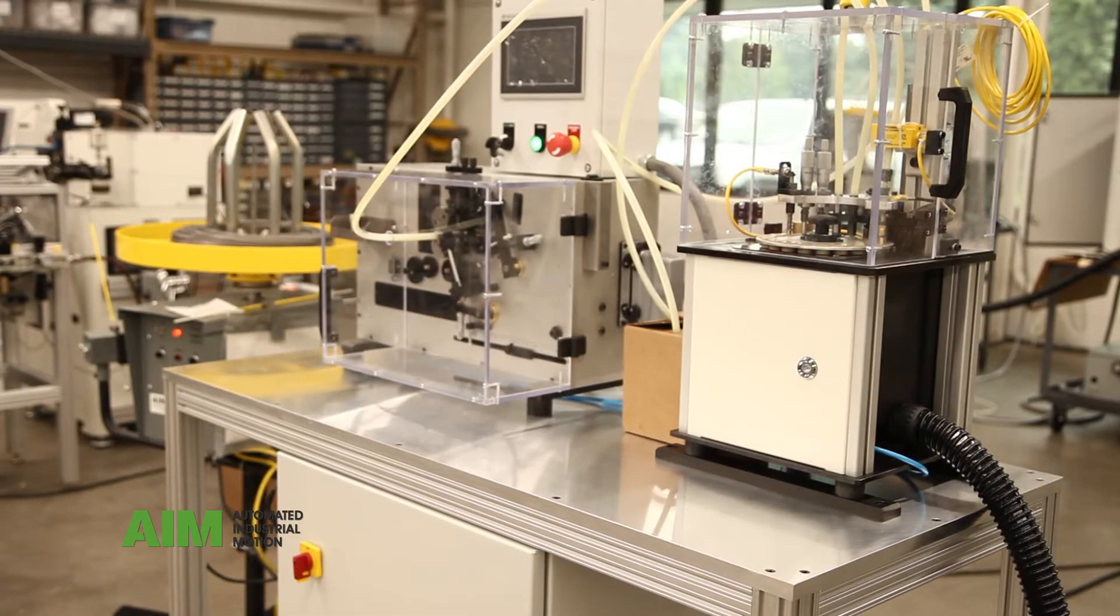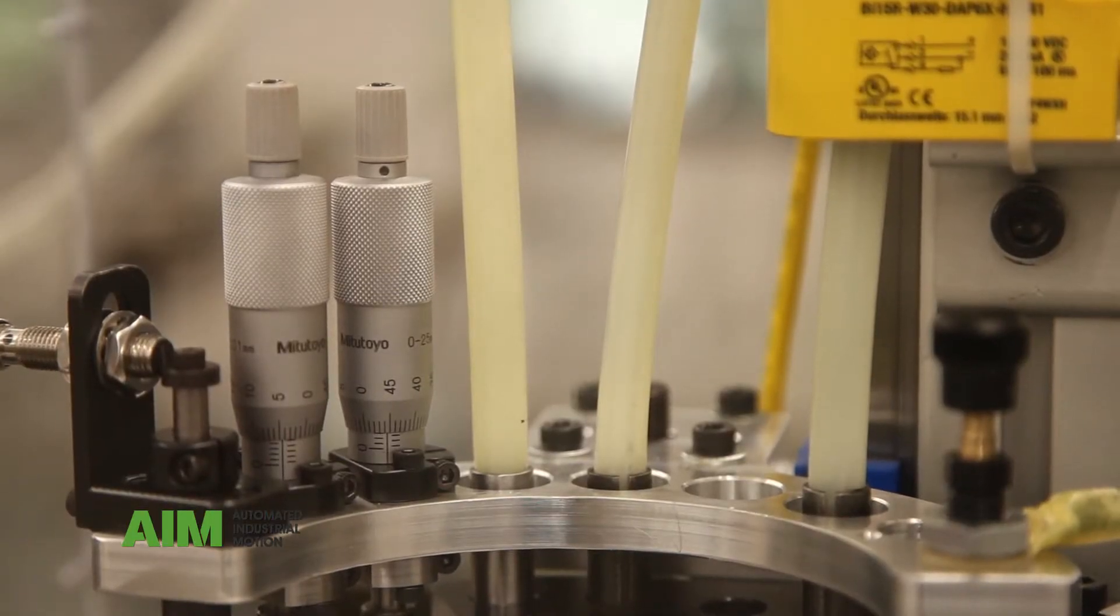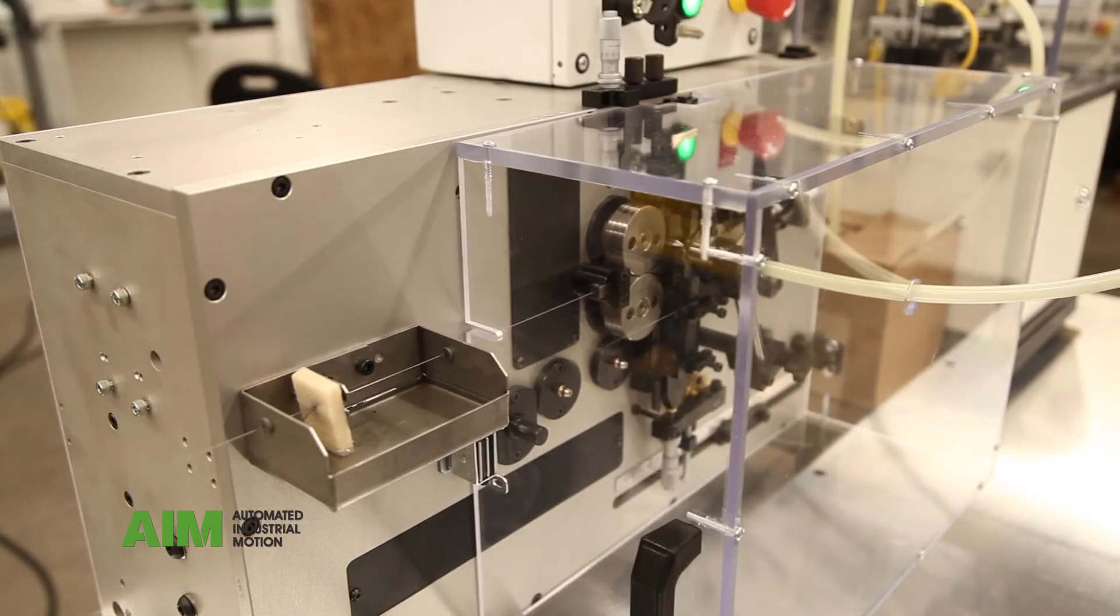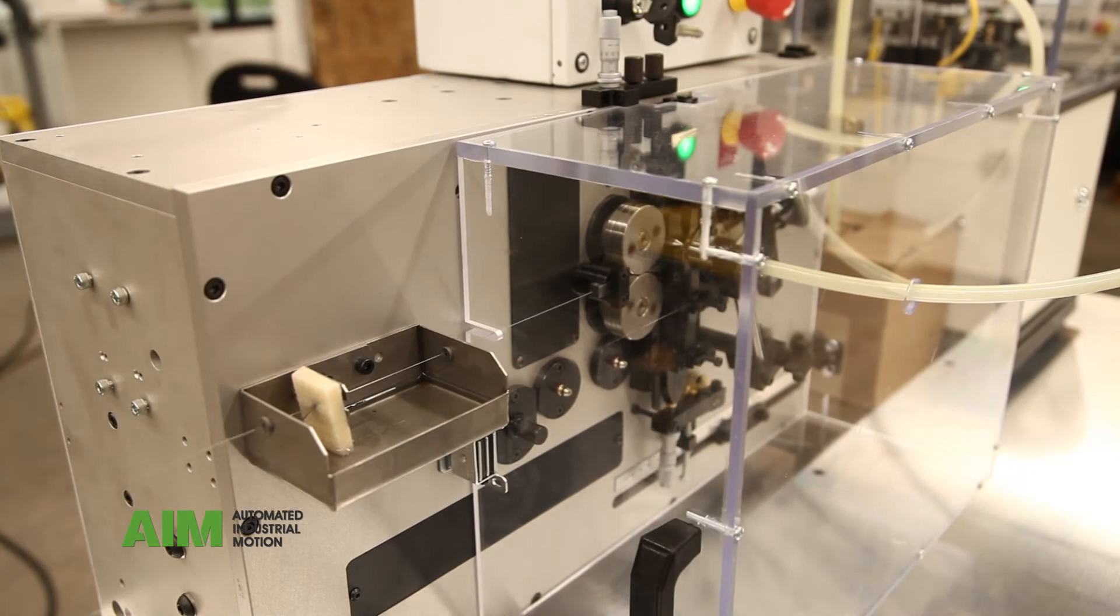Once completed, it rotates to the next station where it is checked for proper length and then undergoes two separate load tests. Good parts are ejected into the line and bad parts are ejected to a scrap bin.